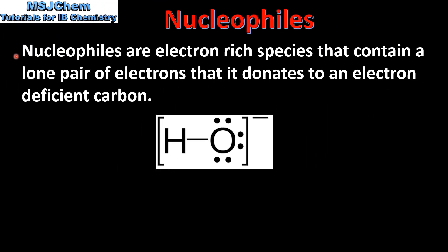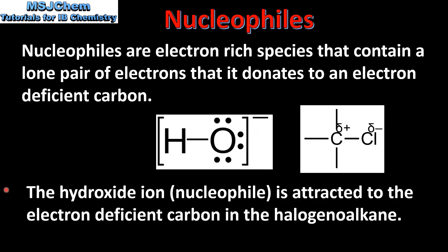Next we look at nucleophiles. Nucleophiles are electron-rich species that contain a lone pair of electrons that they donate to an electron-deficient carbon. Here we have an example of a nucleophile — this is the hydroxide ion. It has three lone pairs of electrons on the oxygen atom and an overall negative charge. The hydroxide ion, which is a nucleophile, is attracted to the electron-deficient carbon in the halogeanoalkane, which you can see here.